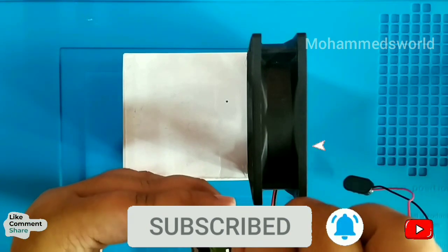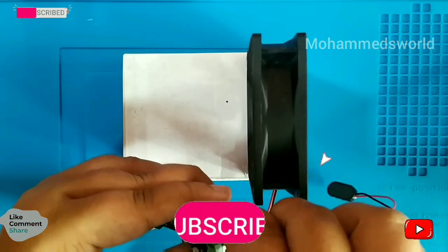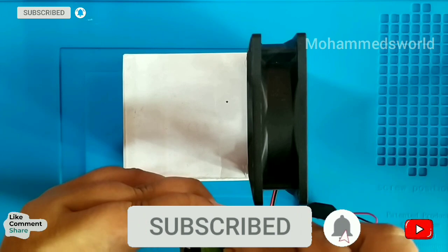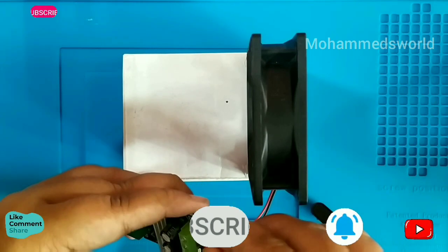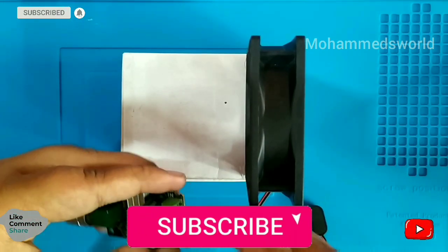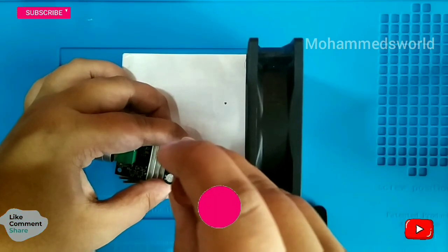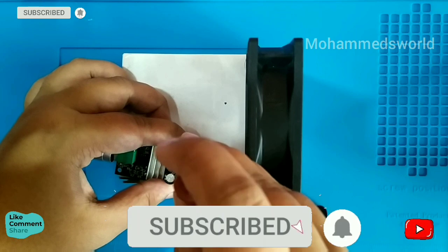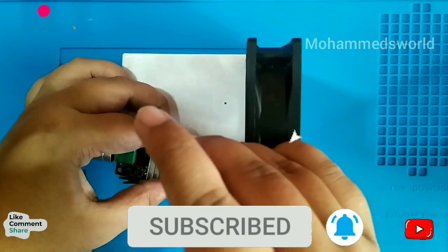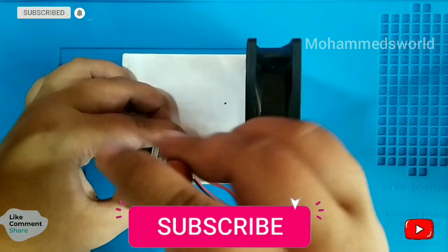After that, you need to take battery black color wire into the power minus.